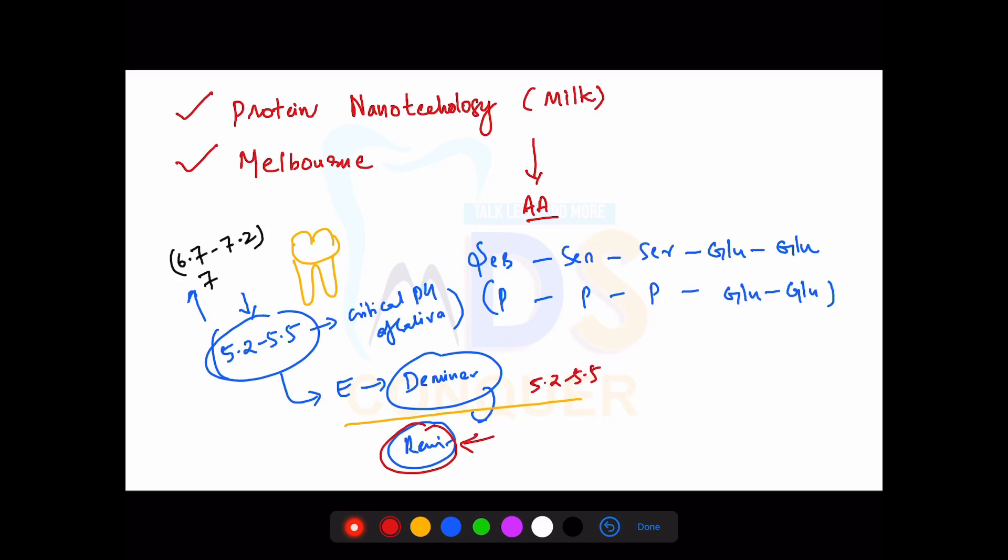Demineralization occurs from the things present in saliva. The extra advantage of adding CPP-ACP is that around the teeth, the casein amorphous calcium phosphate forms a layer. In this you'll have more calcium and phosphorus compared to normal saliva. You'll have more availability of these calcium and phosphorus around the tooth.